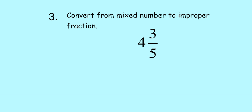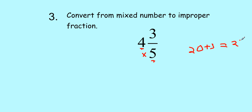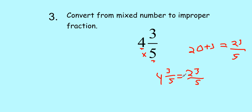Let's take a look at number three. We're going to convert from mixed numbers to improper fractions. To do this, we take our whole number, which is 4, and multiply it by our denominator, which is 5. That gives us 20. Then we add the 3 pieces already there — so plus 3 gives us 23 pieces, and the size of the pieces are fifths. So this is twenty-three fifths — the improper fraction. Four and three-fifths is equal to twenty-three fifths.